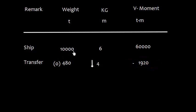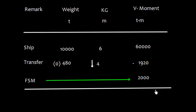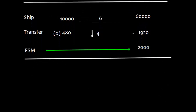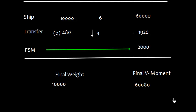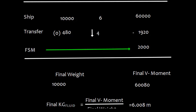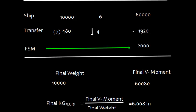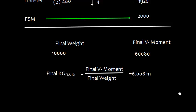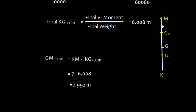The FSM we had calculated was 2000 because both the tanks are slack. Now once we have transferred, we have this final weight as 10,000 tons and final vertical moment 60,080. So we'll get final KG fluid as 6.008.